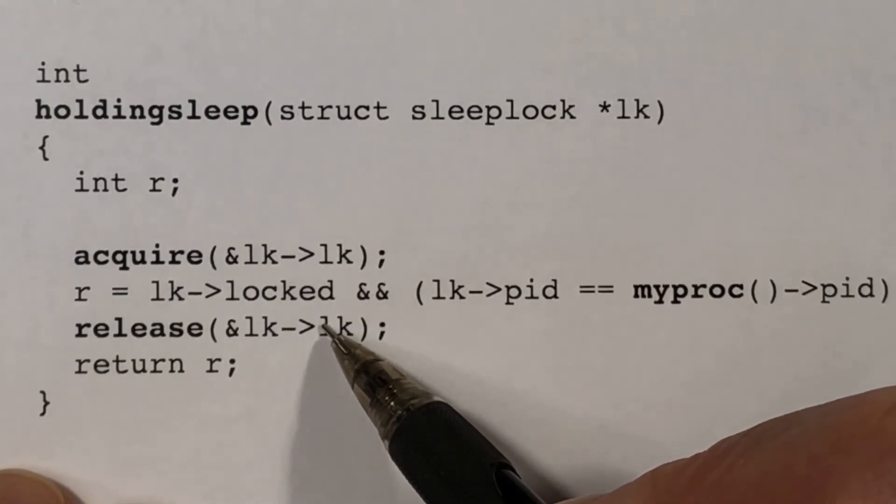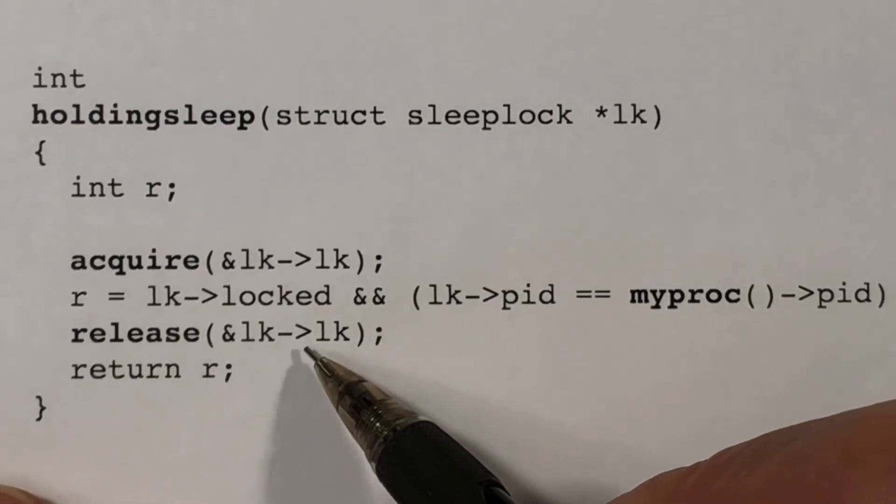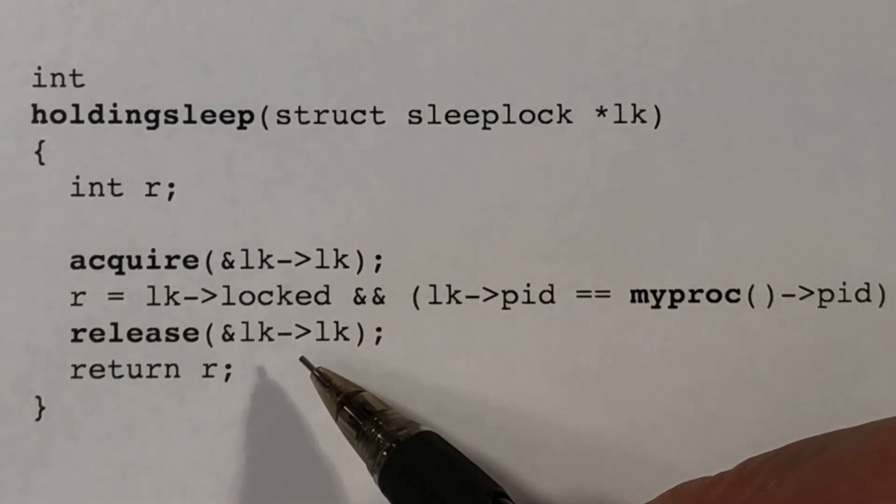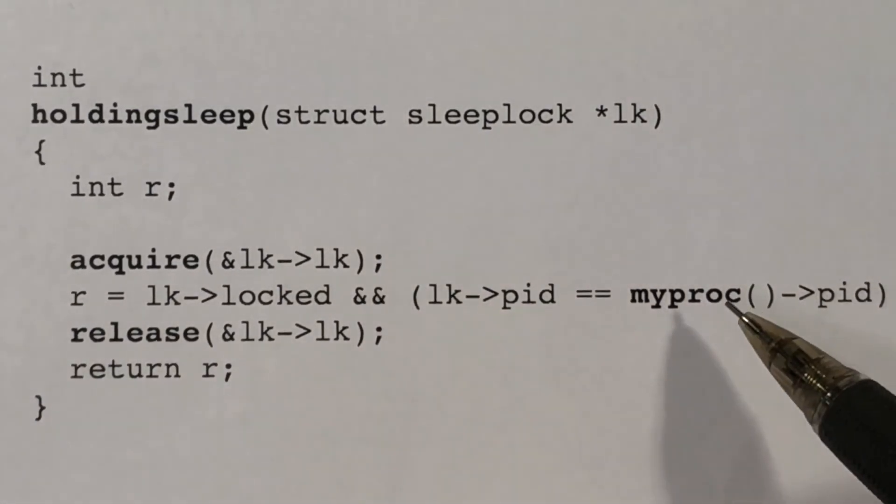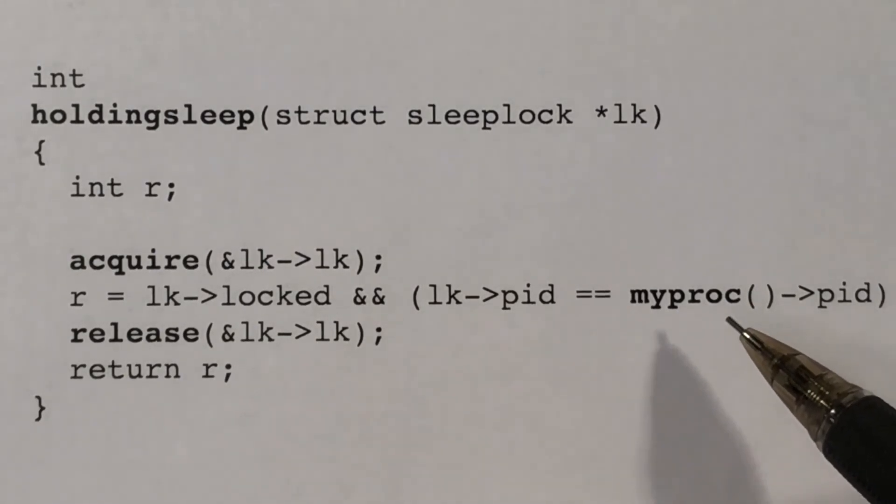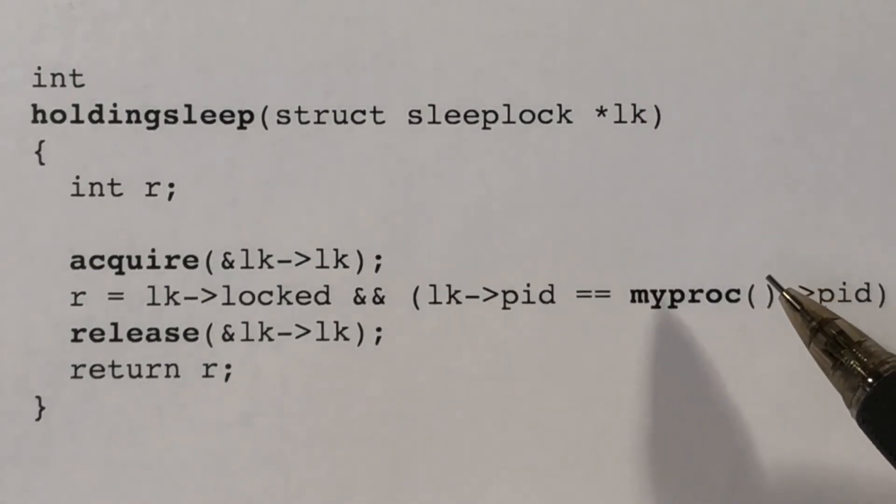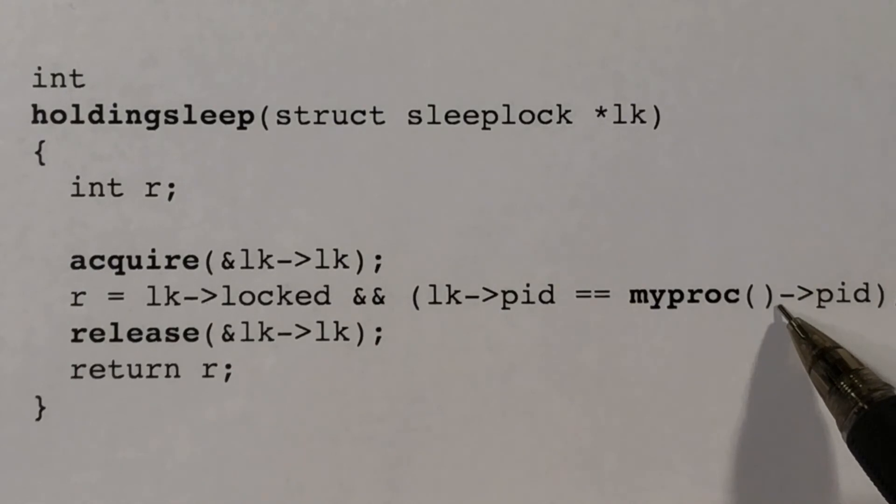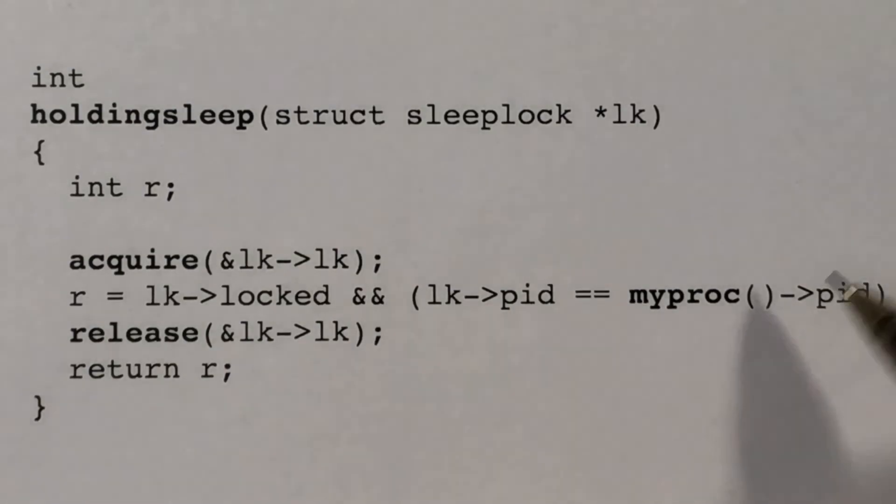So that's all there is to a sleep lock. Very simple. And these are only used in two places. In the buffer cache, we see that each buffer has a sleep lock. And so when a buffer is acquired with the B read function, that sleep lock will be acquired. And the other place we use sleep locks is with inodes. And so we'll see that each inode data structure also contains a sleep lock. Okay, that's it. See you in the next video.